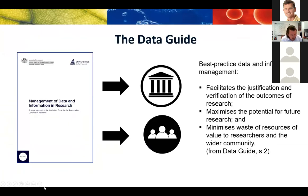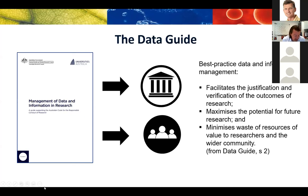The data guide was released in June 2019 — essentially when the 2018 version of the code came into force. Whilst the code was released in 2018, institutions were given a year's grace to put in place the necessary policies and supporting information for their researchers before it came into effect in July 2019. The guide assists institutions and researchers to adhere to the relevant principles of the code. Critically, best practice data and information management facilitates the justification and verification of outcomes of research and maximizes the potential for future research.